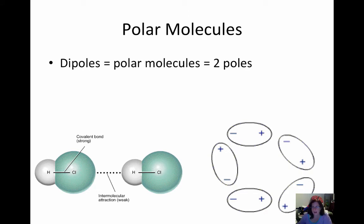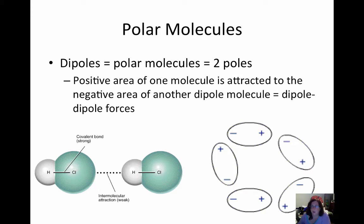Polar molecules create a situation called dipoles. A dipole is when you have a polar molecule with two poles — kind of like a magnet — one more positively charged and one more negatively charged. In a molecule of hydrogen chloride, chlorine has a bigger share of the electrons because it has a much higher electronegativity than hydrogen, creating a more negative side at chlorine and a more positive side at hydrogen. So a dipole molecule has a positive area of one molecule — hydrogen in this case — attracted to a negative area of another dipole molecule. This is called dipole-dipole forces. Each hydrogen will be attracted to the chlorine in another molecule of hydrogen chloride within a substance.